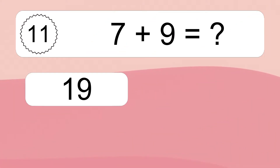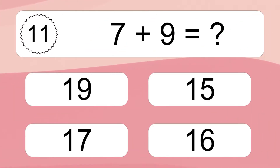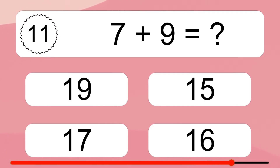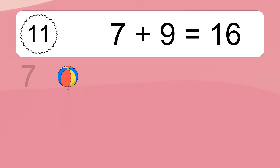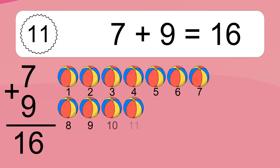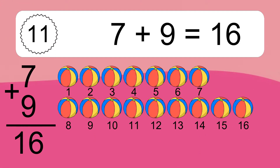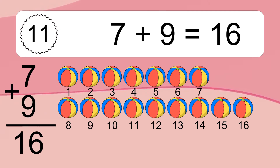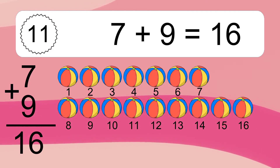7 plus 9 equals what? Let's count it. 1, 2, 3, 4, 5, 6, 7, 8, 9, 10, 11, 12, 13, 14, 15, 16.